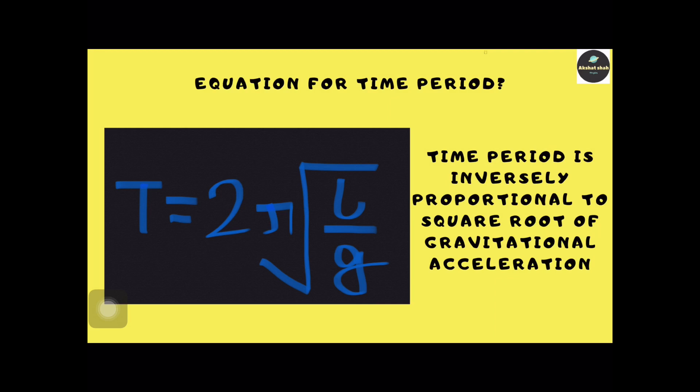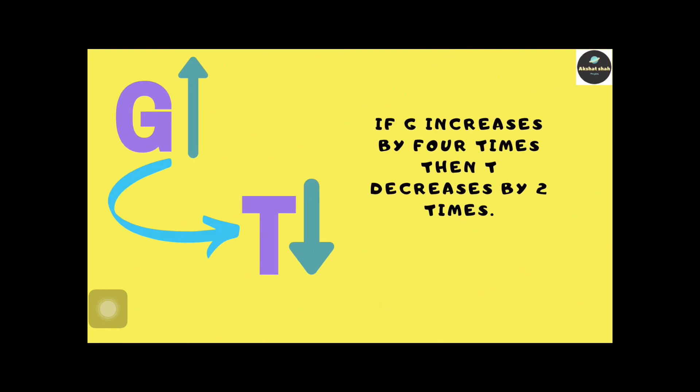From this equation we can find that time period is inversely proportional to the square root of gravitational acceleration, which means that if gravitational acceleration acting on the simple pendulum increases, then the time period decreases.